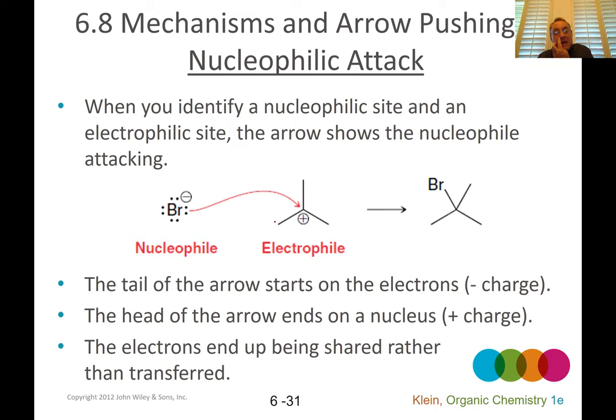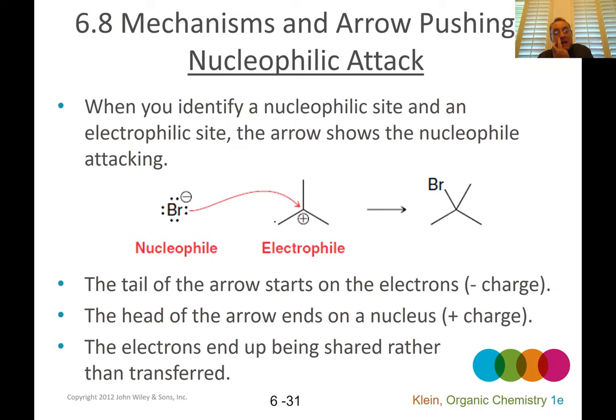So let's look at nucleophilic attack first. So when you have a nucleophile, which is an electron-rich species, remember things with lone pairs, for example, and you have an electrophile, which is typically something that has only six valence electrons, like this carbocation, or maybe it's the positive end of a bond dipole.